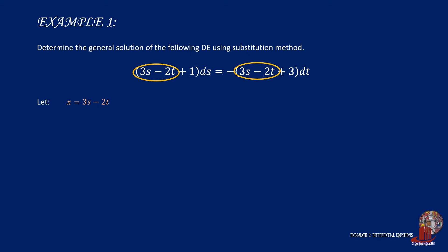If we take the derivative of x, it would be 3ds minus 2dt. From here, we can choose to isolate any of the derivatives ds or dt as a function of dx. In this example, I choose to use dt, which would be isolated to give the function dt is equal to 3ds minus dx all upon 2.